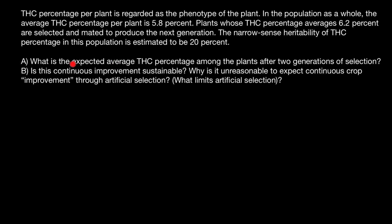The first question is: what is the expected average THC percentage among the plants after two generations of selection? In the general population, the mean THC content per plant is 5.8%. We select parents for our breeding program with a percentage greater than average. The difference between the general population and the selected parents is 6.2 minus 5.8, which gives us 0.4. This is the selection differential — the difference between the mean of the general population and the mean of the selected parents.